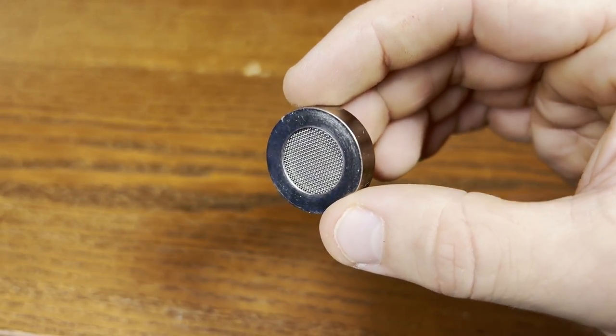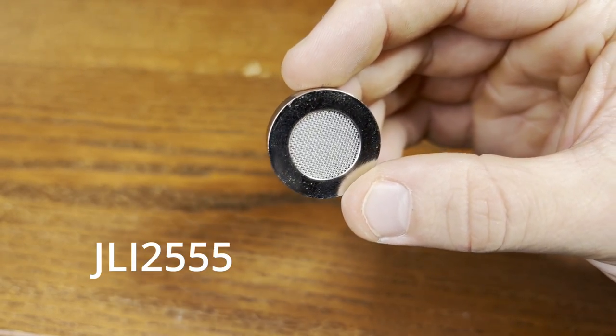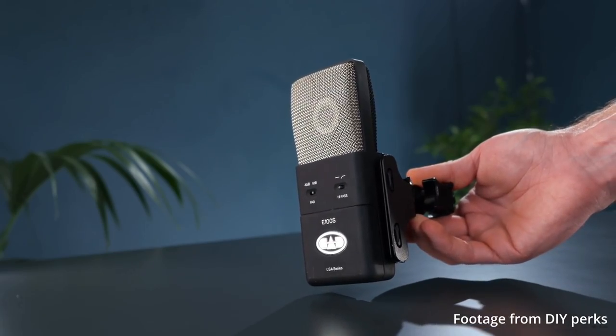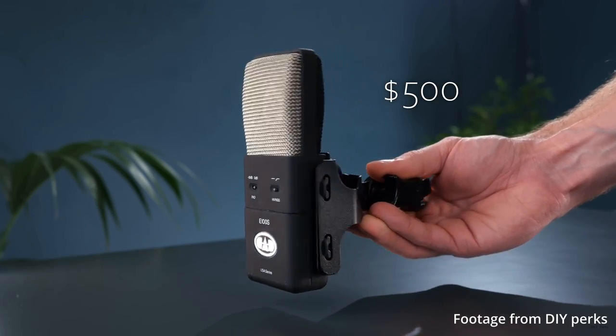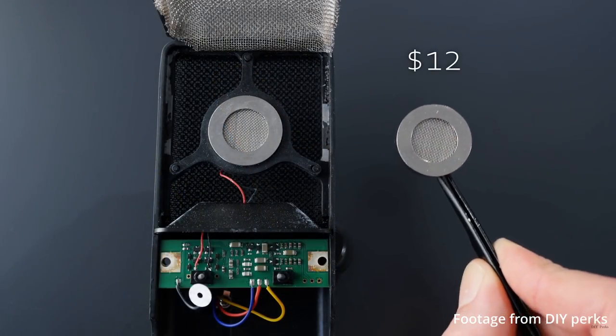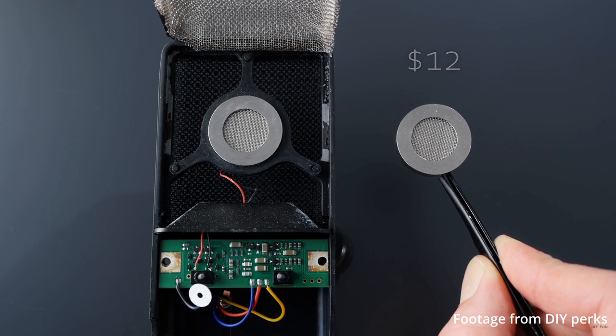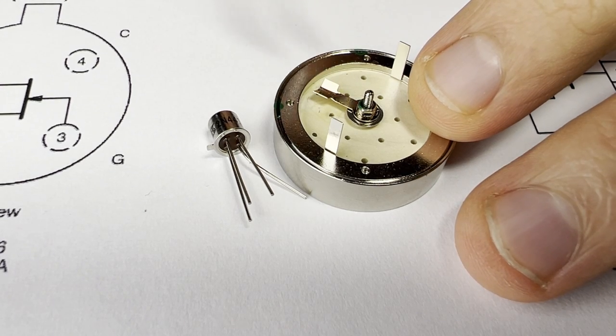The microphone element we're going to use is called the JLI 2555 and it's used in microphones that cost around $500. If you order the element directly from the manufacturer it actually only costs $12, but there's a lot that needs to be done before you can get it to work.